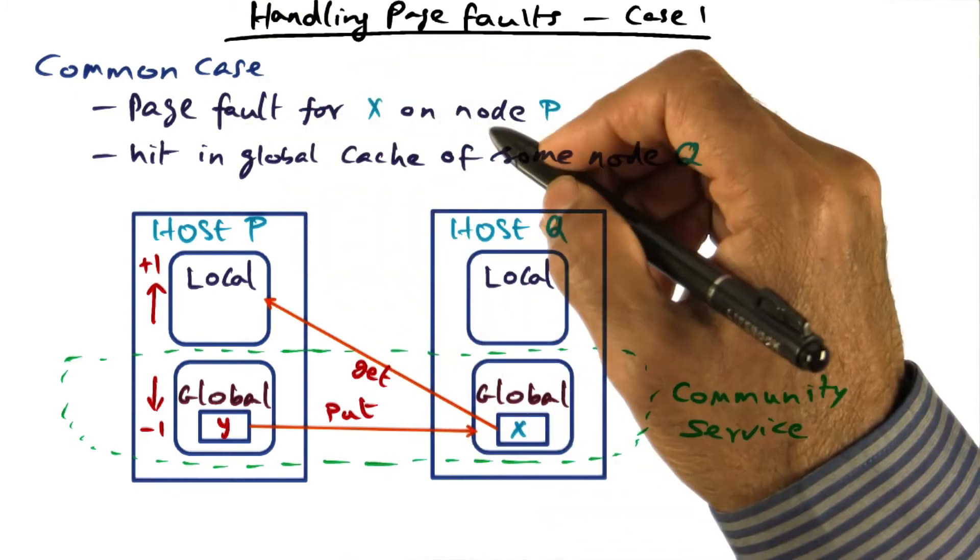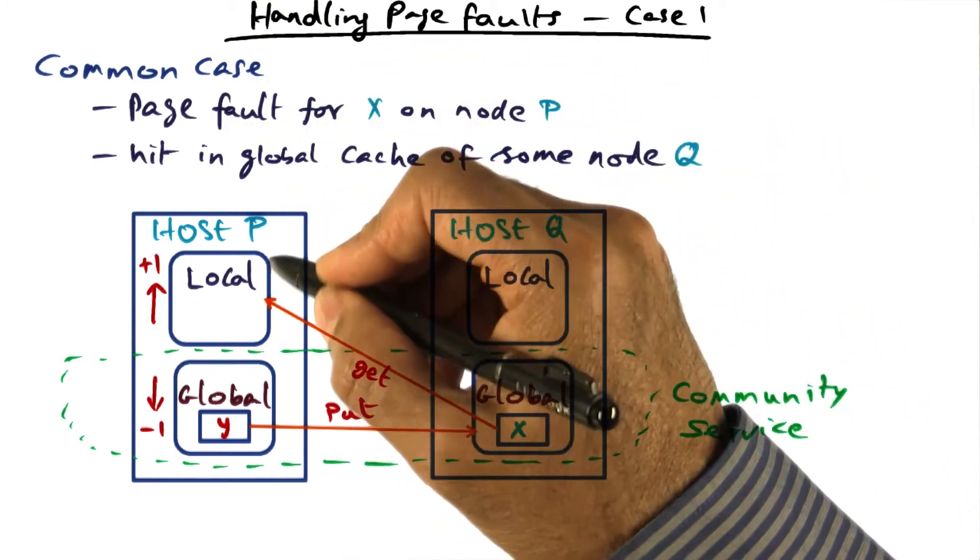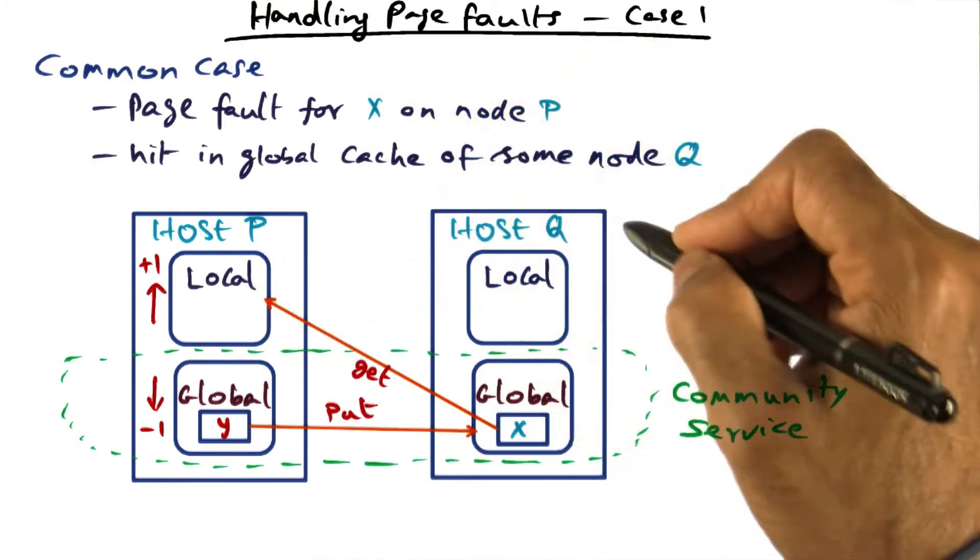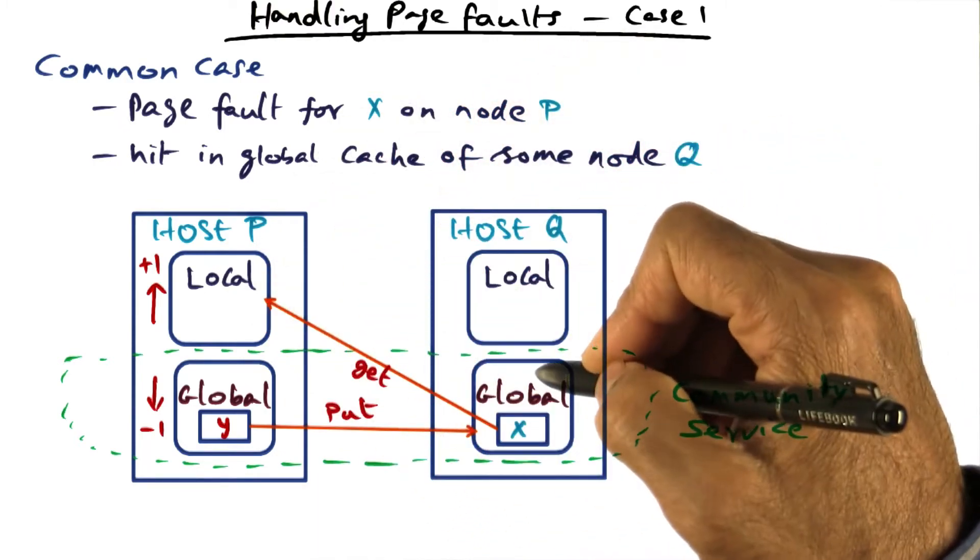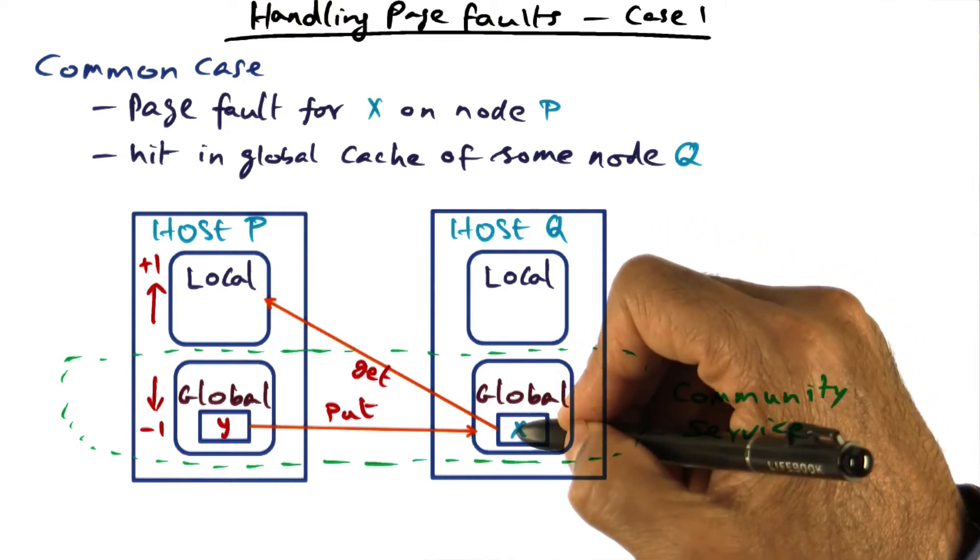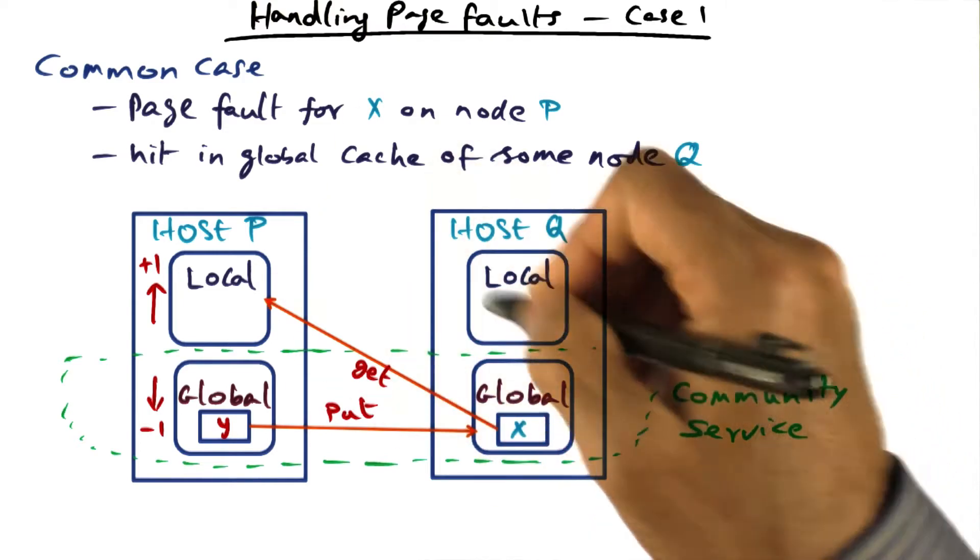So what would happen in order to handle this page fault is the GMS system will locate, oh, this particular page, it's on host Q. So it'll go to host Q. And the host Q will then send the page X over to node P.